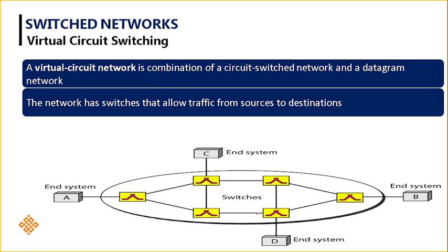The key difference between circuit switching and virtual circuit switching is that both are connection-oriented. However, in circuit switching, once the connection is established the physical path is fixed — if a link is broken, the route must be re-established from the source. In virtual circuit switching, if a link is broken, the route can be dynamically re-established from the switch where the link broke, using VCIs — virtual circuit identifiers.